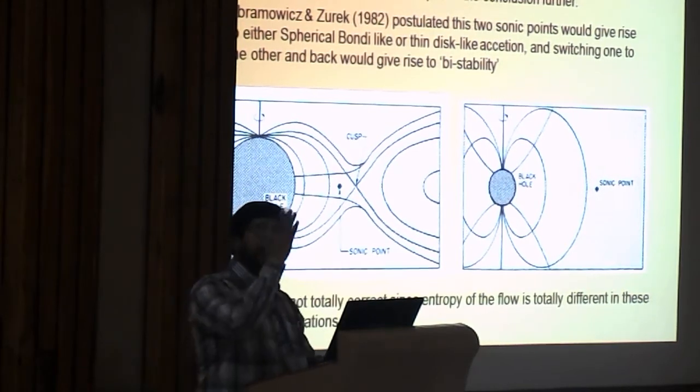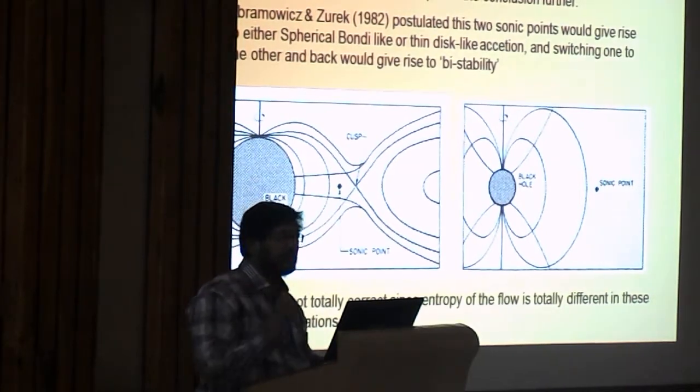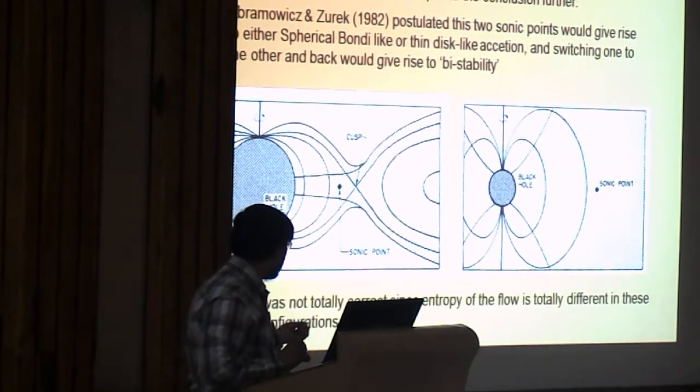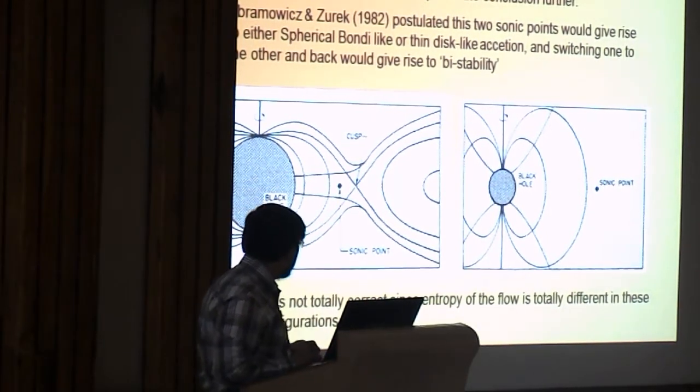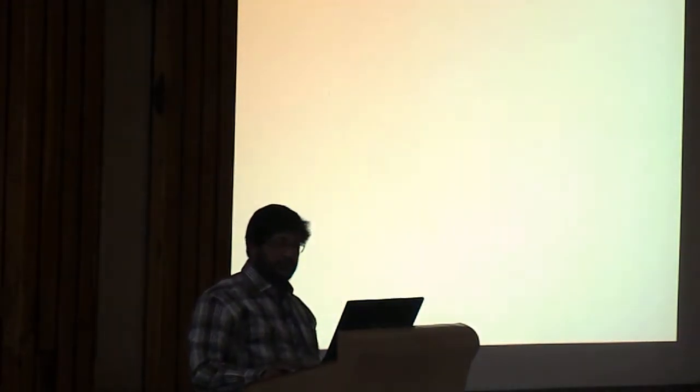So, they tried to have a transonic solution only in the inner three Schwarzschild radii. Just the inner part. So, they got one sonic point here through which the matter is falling. But then, that was not the entire story yet.